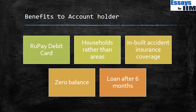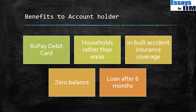There are various benefits to account holders. First, they get a RuPay debit card — a smart card that beneficiaries can use to operate the bank account without help from others. This is also the first time any scheme has focused on the household rather than geographical areas, aiming to provide one bank account per household. It also has inbuilt accident insurance coverage, zero balance requirement, and access to a loan after six months of operating the account.